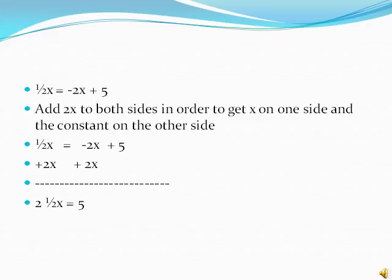We add 2x to both sides of the equation to get rid of the negative 2x on the right-hand side. This gives us 2 and a half x equals 5.